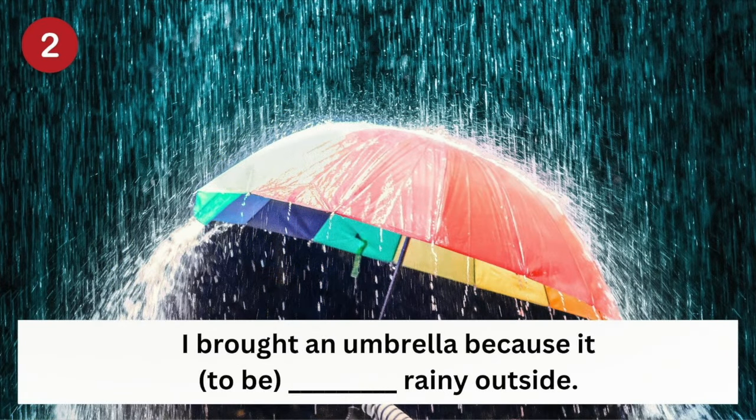Number two: I brought an umbrella because it ___ rainy outside. What was the past tense of to be? Was. I brought an umbrella because it was rainy outside.